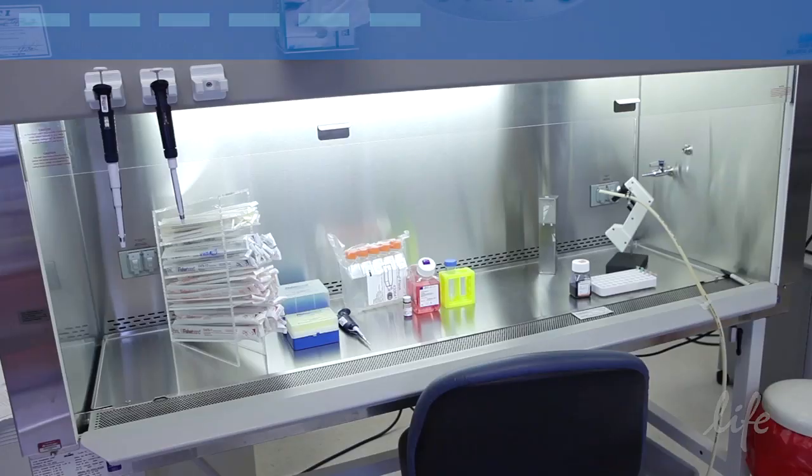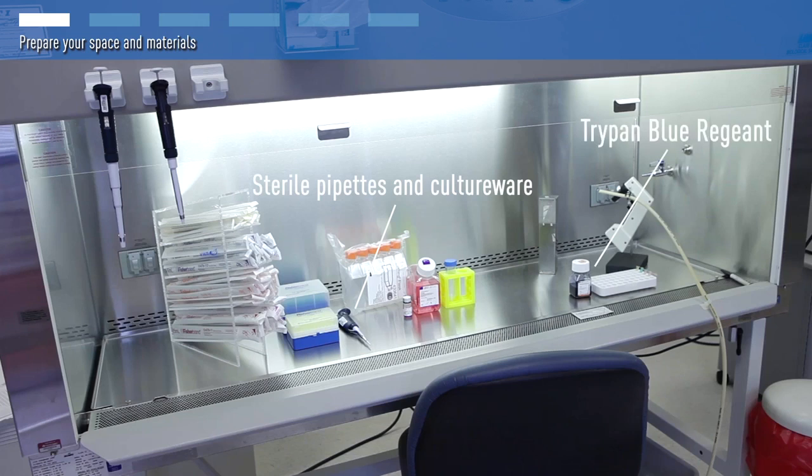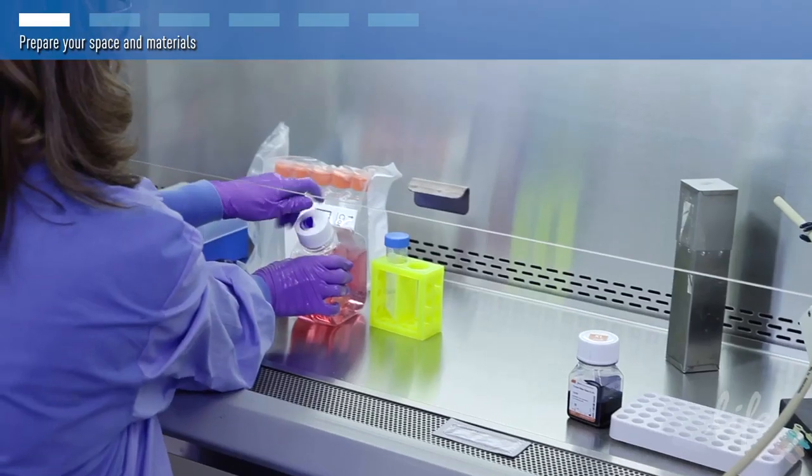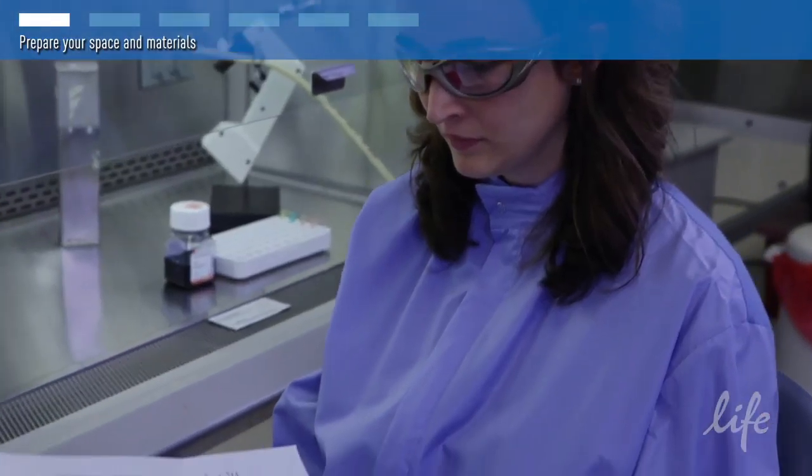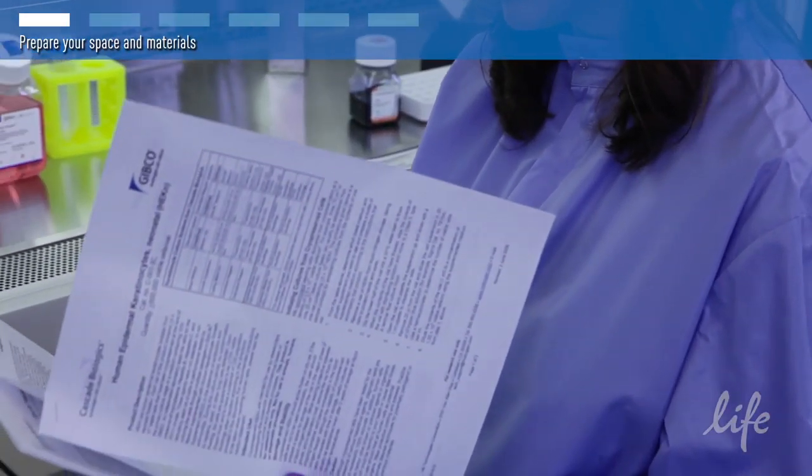Start by prepping your space and materials. You will need a 37°C water bath and standard tissue culture flasks and pipettes. Prepare the basal media and supplements for your particular cells by following the product manual and label and date all medium bottles.